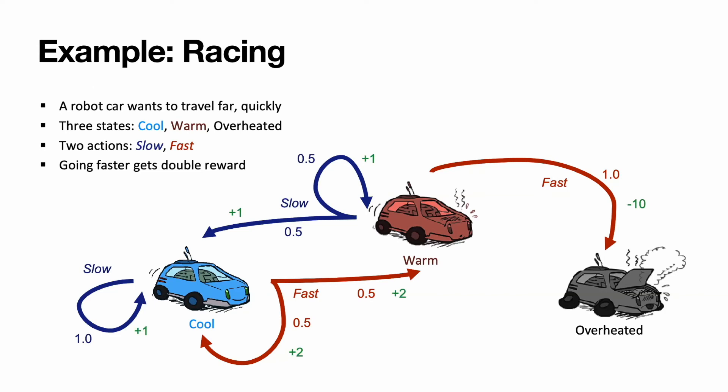The goal of the exercise is to move as far as possible and as fast as possible. So moving slow, we are playing low-risk strategy. We are moving slow, but we are guaranteed not to overheat. If we are moving fast, there is a 50% chance that the car will overheat, but moving fast gives us twice larger reward than moving slow.